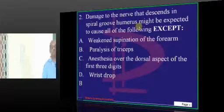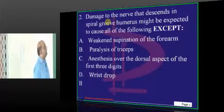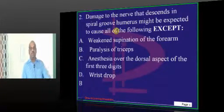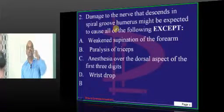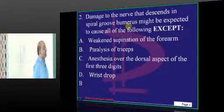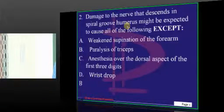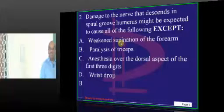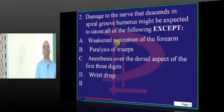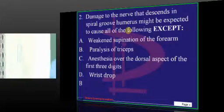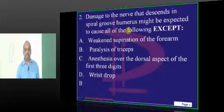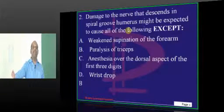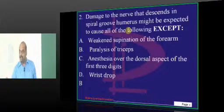Now, coming to the nerve which passes through the spiral groove, which is the nerve, doctor, we are talking about radial nerve. Radial nerve also supplies the supinator of the forearm. Tell me doctor, what is the supinator of the forearm whenever elbow is extended? When the elbow is extended, it is supinator muscle, which is supplied by radial nerve.